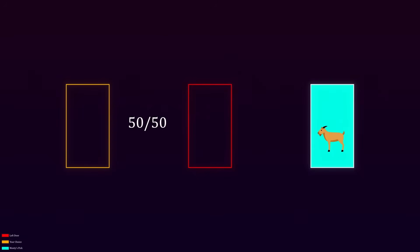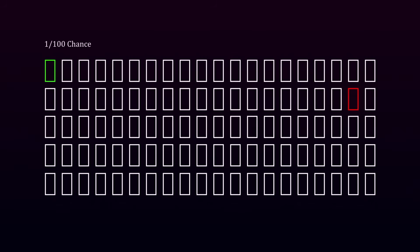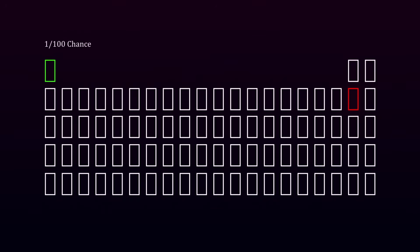But this explanation can feel counterintuitive. People tend to view the doors as separate individual options rather than as groups. The idea that switching gives you the benefit of both unchosen doors can seem tricky or misleading. After all, only one door remains unopened. How can it represent the combined chances of two doors? That's where the disconnect happens, making it harder for skeptics to see the logic behind the strategy.